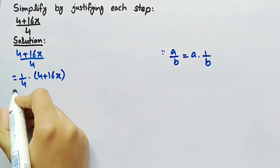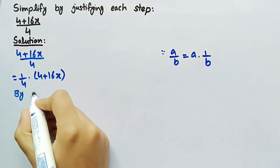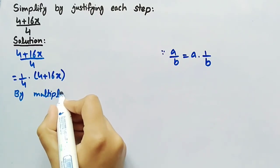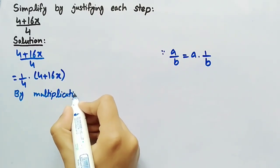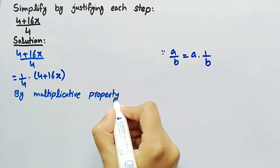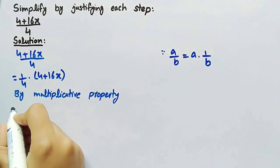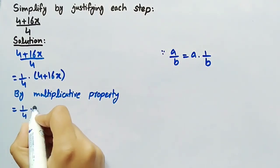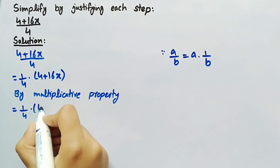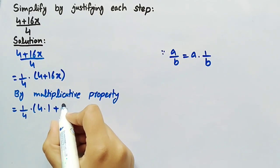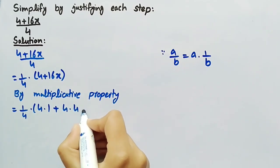By using multiplicative property, we can write it as 1 by 4 into 4 into 1 plus 4 into 4x.